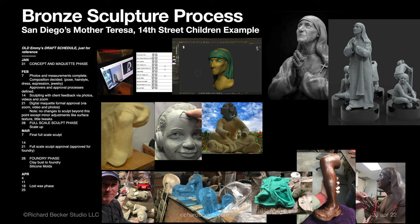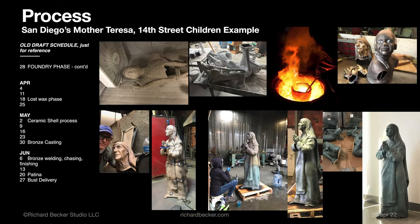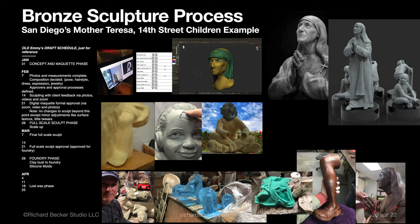So the first phase is the concept maquette — this is where we decide and design the sculpture: what's going to be in, what's not, the pose, the look, the feel, the era we're depicting of the person, etc. And when I can, I get some measurements of the subject.